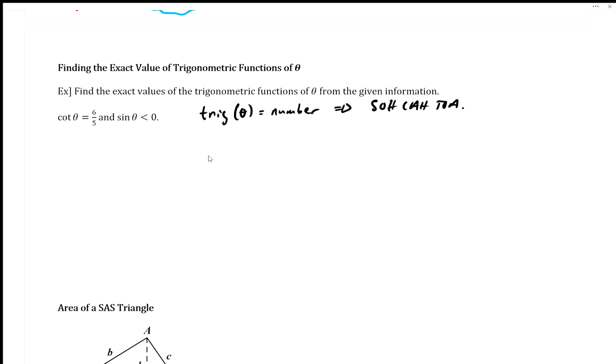Let's set up our answers over here. So sine of theta equals blank, cosine of theta equals blank, tangent of theta equals blank, and then let's hopefully give ourselves enough room - cosecant of theta equals blank, secant of theta equals blank, and then cotangent of theta that they gave us, positive six over five.